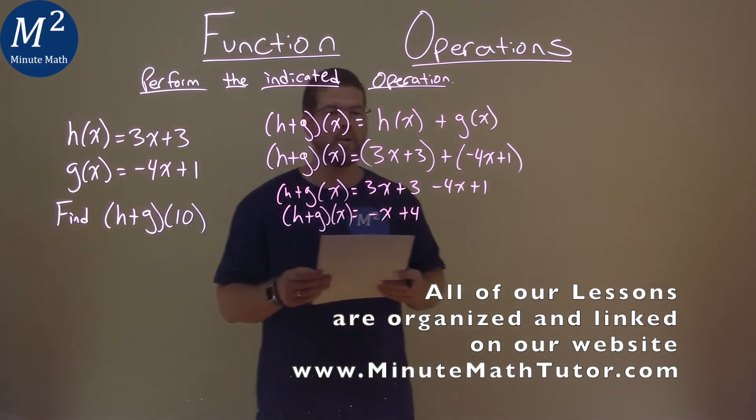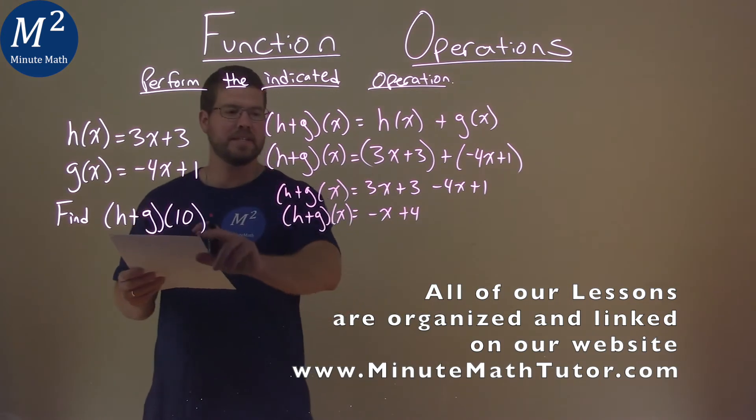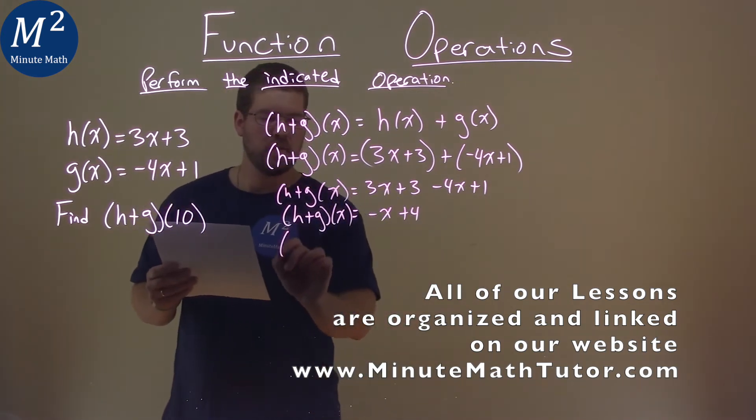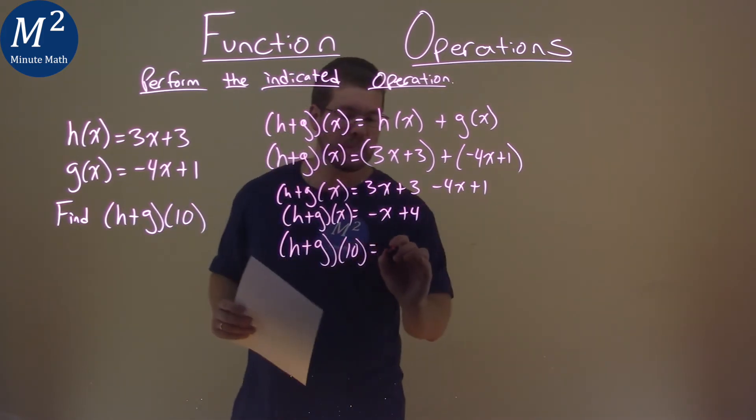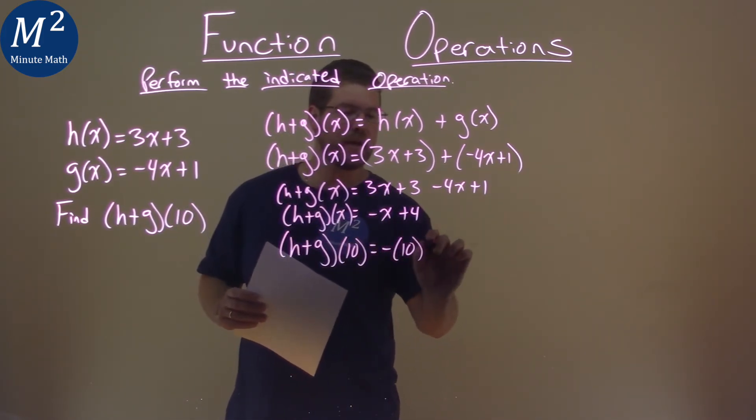And now we are ready to put 10 in for x. So (h+g)(10) - instead of x, we're putting a 10. So negative 10 in for x, plus 4.